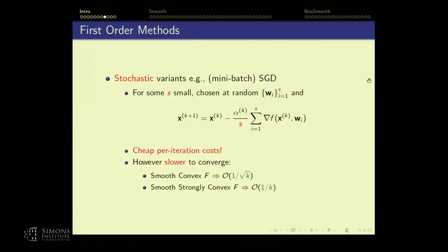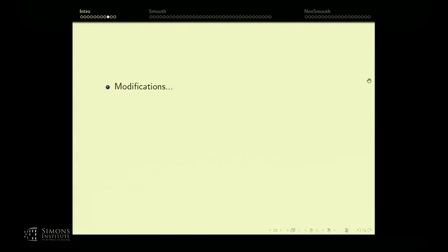What do I mean by rate? Convergence rate — for example, the objective value going down to the optimal. The difference between objective value and optimal value: how fast is it improving at every iteration? For example, the difference between the current iterate and the true minimizer goes down with rate 1/k. If you have a strongly convex problem, you went from linear convergence to sublinear with SGD.